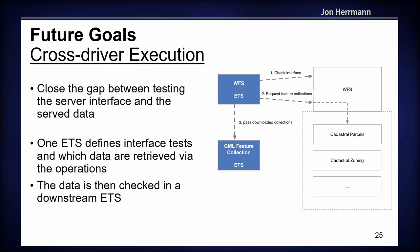Our future goals are to close the gap between testing just the server interface and also testing the served data. The idea is to have one executable test suite for checking the interface and one for checking the data, and then the interface ETS passes the data to a downstream ETS. This makes it reusable — for instance, if you want to test OGC API Features instead of WFS, you can reuse the downstream ETS for testing the data.